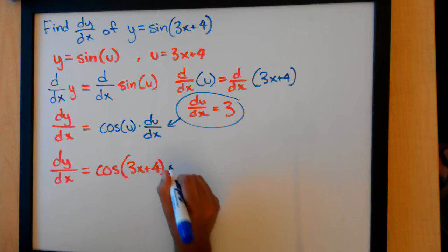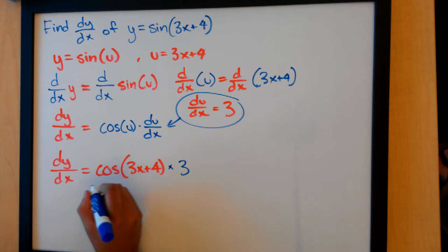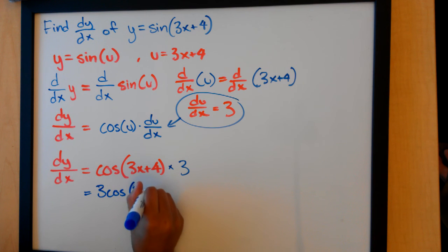3x plus 4 times du over dx, which is 3, which is simply 3 cosine of 3x plus 4.